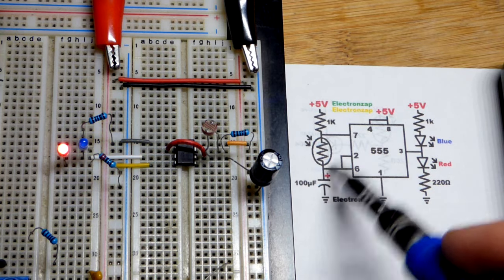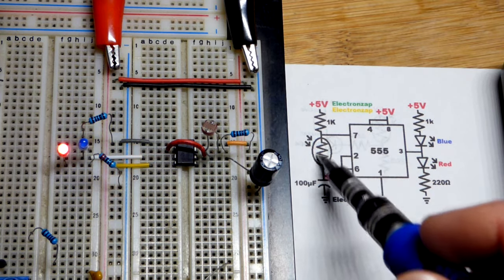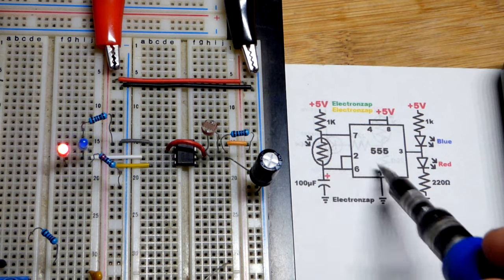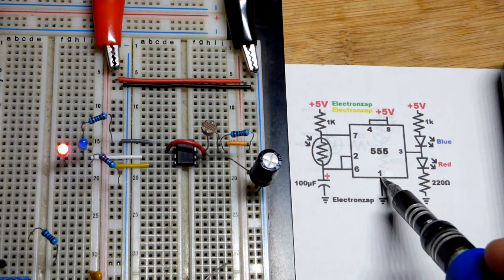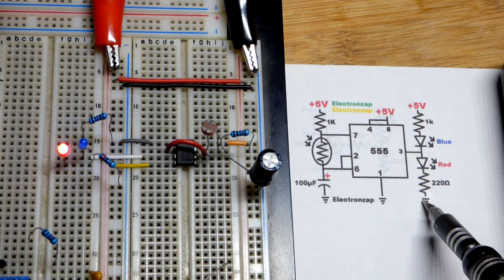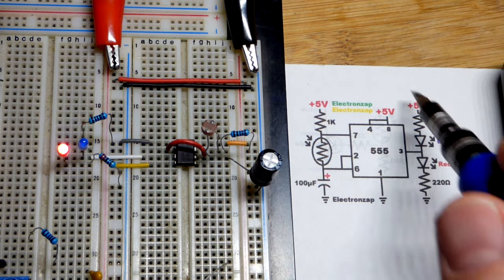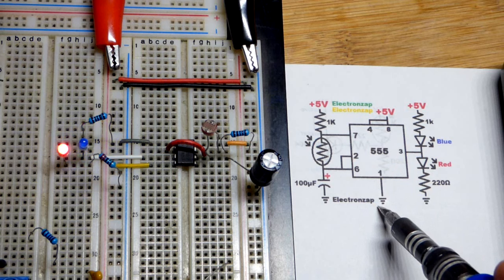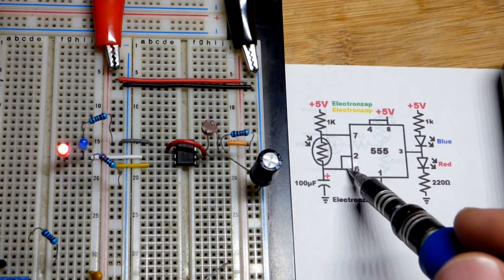So again, capacitor charges. That pin is disconnected while it charges, and then it connects to ground while it discharges. And the output is high while the capacitor charges and is low, or actually that way, it is low when the capacitor discharges right there.